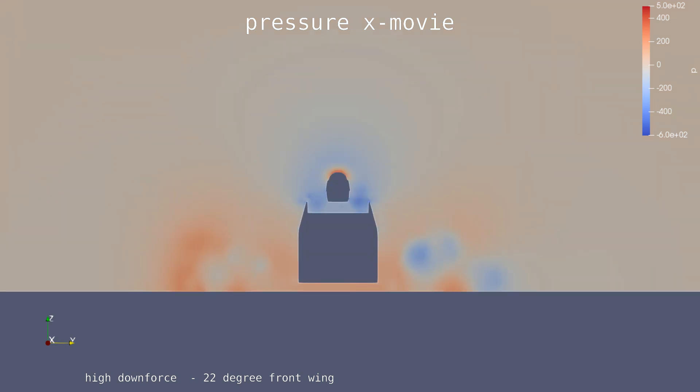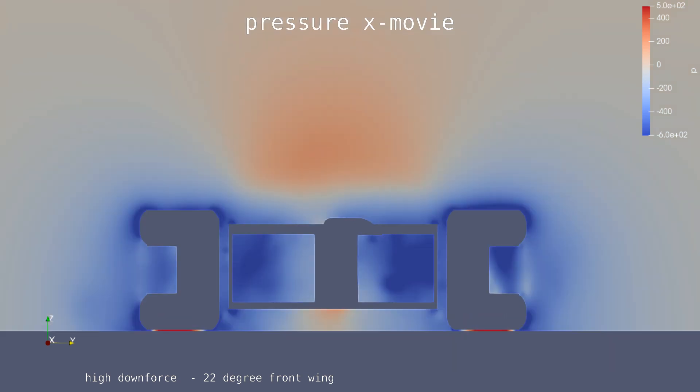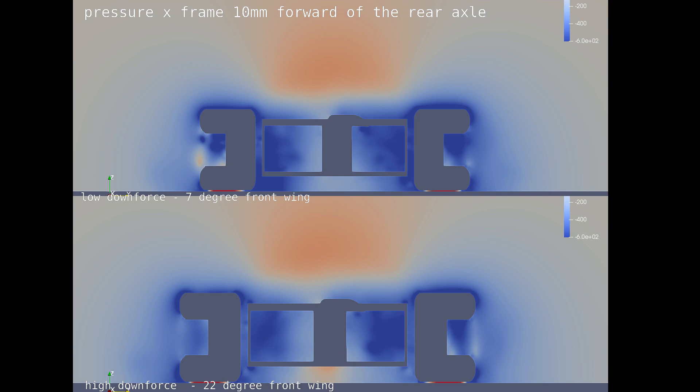The second set is the flap at 17 degrees. This shows more disturbance behind the front wing which goes on to influence the rear of the car. The image which tells us the most about the rear wing performance would be taken just before the rear axle in wing. The high pressure field is slightly smaller in front of the rear wing meaning that there is less free stream flow impacting it.